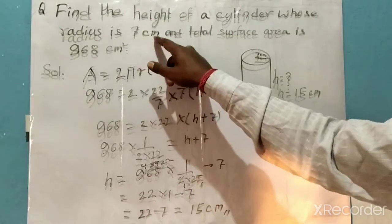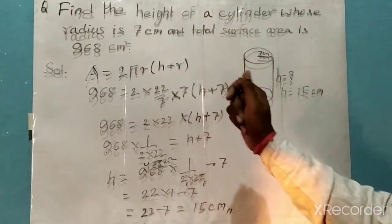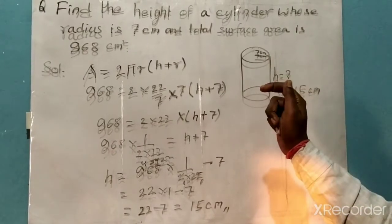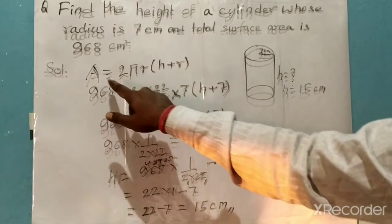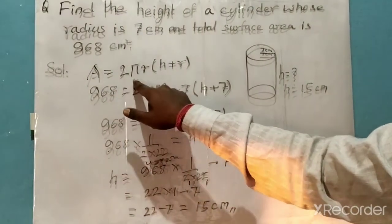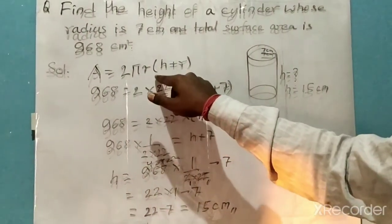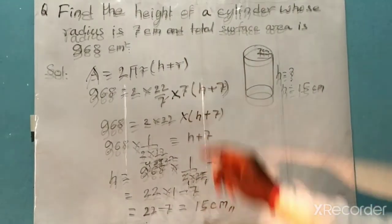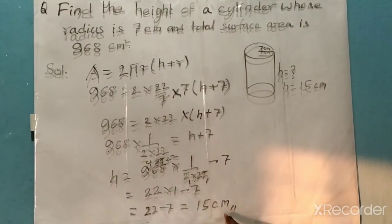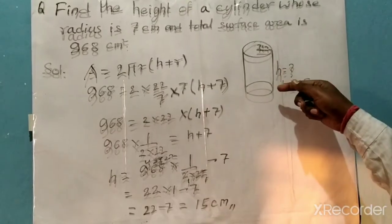The radius is given as 7 centimeters. We noted the formula to find the total surface area of a cylinder: Area = 2πr(h + r). On solving this, we found 15 centimeters is the height of the cylinder.